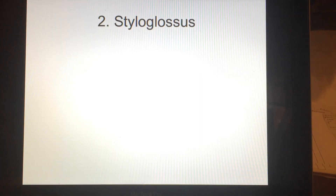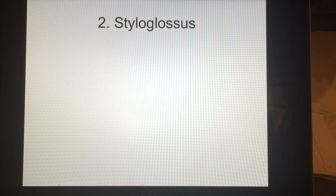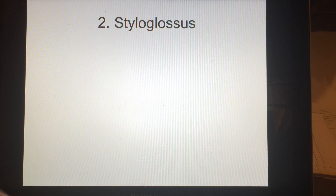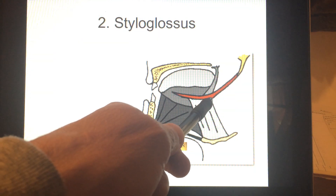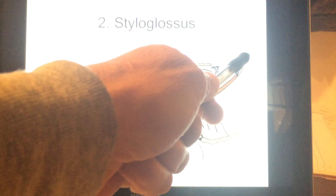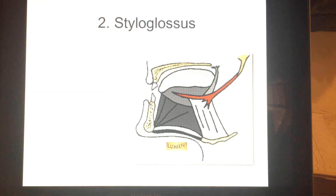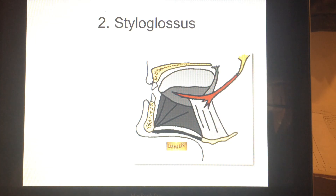Let's go to number two: the styloglossus. Glossus still means tongue. Stylo makes reference to the styloid process — that little pointy piece of bone sticking down there, the sharp projection coming off the temporal bone. So the origin is the styloid process, the end that doesn't move, and then the tongue itself is the insertion — specifically the sides of the tongue.